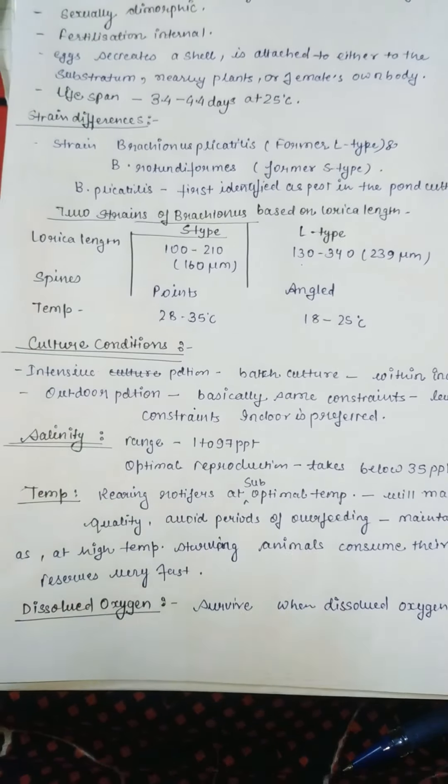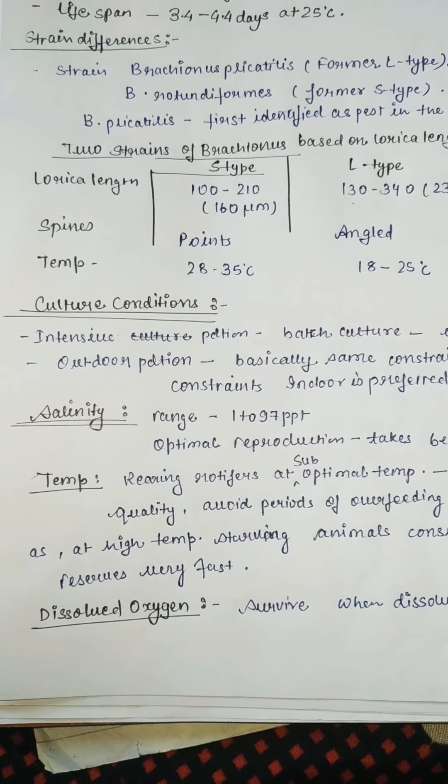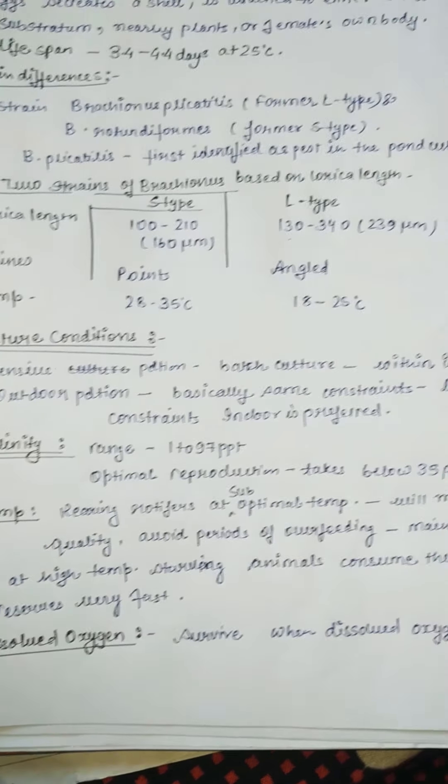For lorica length, the S-type ranges from 100 to 210 or 160 micrometers, while the L-type is 130 to 340 micrometers. For spines, the S-type B. rotundiformis has pointed spines and the L-type has angled spines. Temperature for S-type is 28 to 35 degrees Celsius and for L-type is 18 to 25 degrees Celsius.